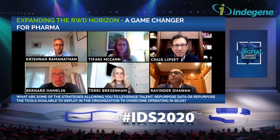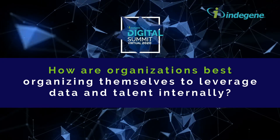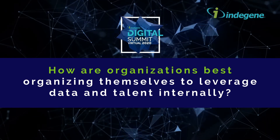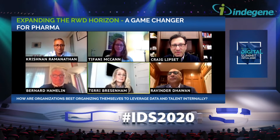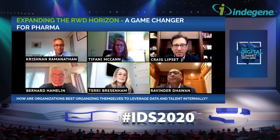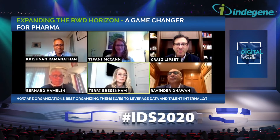One of the biggest barriers for rapid success is how companies organize this information — how the right data gets ingested into the system so people can actually make use of it. The second barrier is that it cuts across a lot of internal boundaries and silos that we've conventionally built in the way we operate.